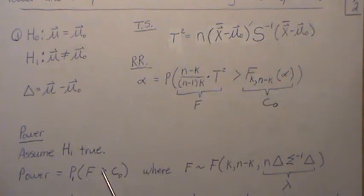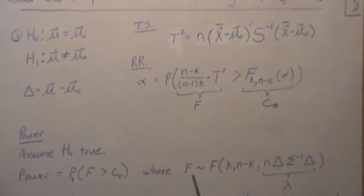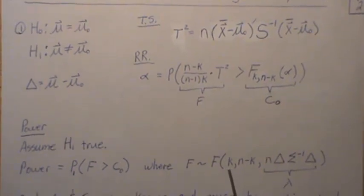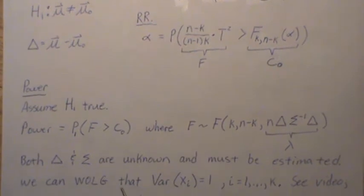But where F, now since we're under the alternative hypothesis, F is distributed with a non-central F-distribution, numerator degrees of freedom K, denominator degrees of freedom N minus K. And then this is the non-centrality parameter, which we call lambda. Now, to calculate power and sample size, since both delta and sigma are unknown and must be estimated.